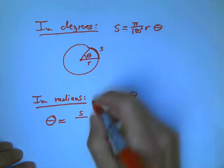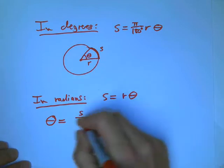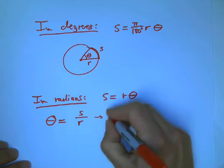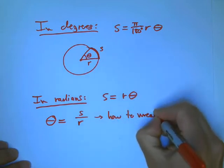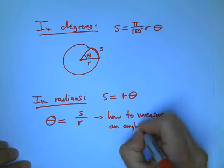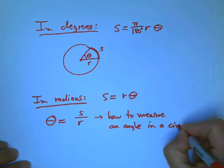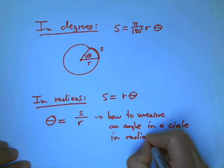Say, suppose I happen to know how much of the crust of the pizza there is. Take that and divide it by the radius. And that's really the definition in principle of how to measure an angle in a circle in radians.